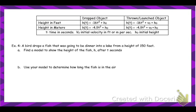Now we're going to look at projectile motion — this is really important. Note: there's a typo in your notes; the velocity term needs to be multiplied by t as well. If we're working in feet, the equation is h(t) = negative 16t². The negative 16 comes from gravity being 32 feet per second squared times negative one half. For the first example, a bird drops a fish from 150 feet. Since it's dropped (no velocity), the equation is h(t) = negative 16t² + 150.